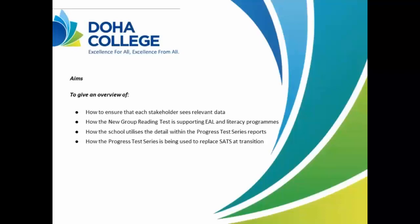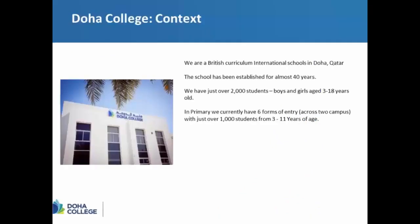Myself and Derek will move between the two, but Derek's going to start by talking through the new group reading test and the progress tests. Just to give you a little bit of context about the school first: we are a British Curriculum International School in Doha, Qatar, which is in the Middle East. We've been around and established for almost 40 years. Over the last few years our school has increased quite drastically, particularly in our primary school. We were traditionally a six-form entry secondary with a small two-form entry primary school on one campus, and five years ago, at the request of the ministry, we expanded and had an additional campus added, bringing our primary school to a six-form entry primary across two campuses.